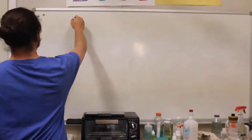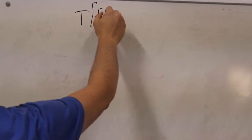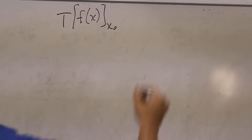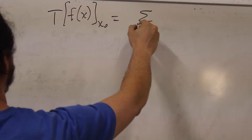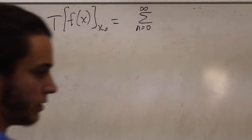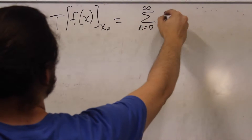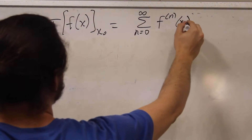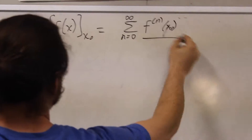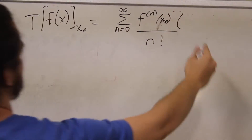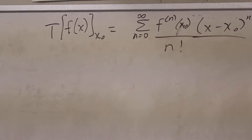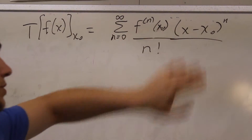So, remember Taylor series looks like this. The Taylor series of some function of x evaluated at a certain point, say x₀, is going to be a sum from n equals 0 to infinity of the nth derivative of the function at the point of interest x₀, divided by n factorial times x minus x₀ to the nth power. That's really it — that's just a Taylor series.